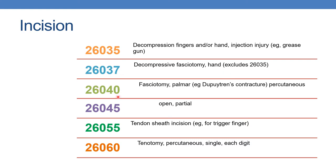The next is 26040: fasciectomy palmar — for example, Dupuytren's contracture, percutaneous. The next is 26045: fasciectomy palmar, open partial. The next is 26055: tendon sheath incision — for example, to treat trigger finger.